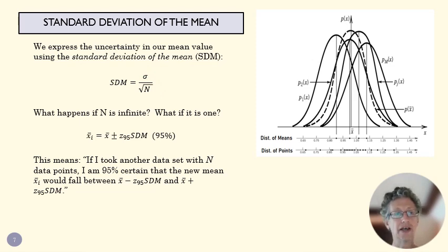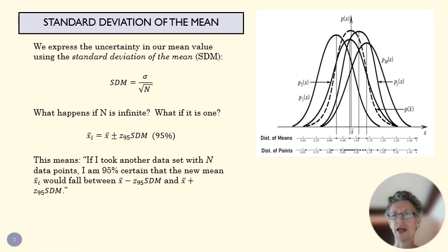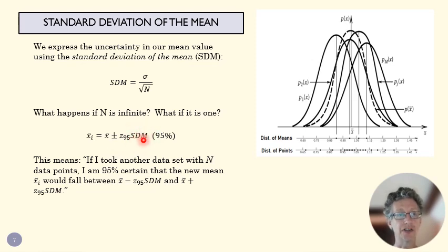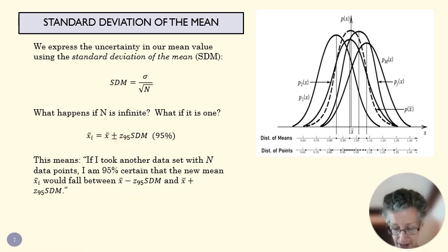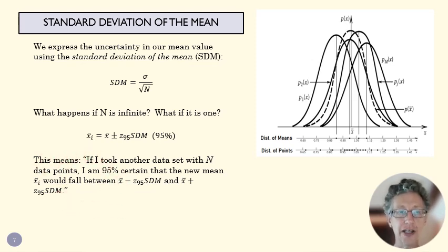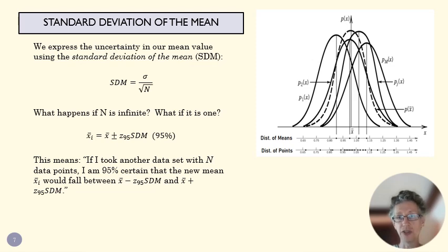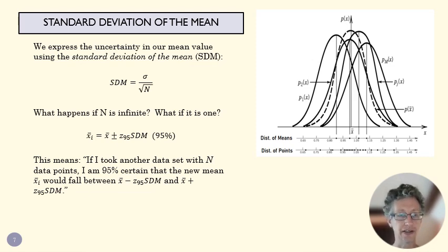When we take a set of data points and want to report the value of one thing measured multiple times, we use the standard deviation of the mean. For a 95% confidence level, we use Z95 which is 2, and our uncertainty is 2 times the standard deviation of the mean. The key translation: if I took another data set with N data points, I'm 95% certain that the new mean will fall within this range. That's how we express random uncertainty in a set of data.